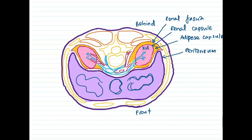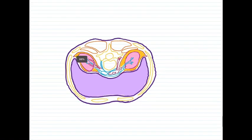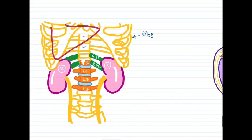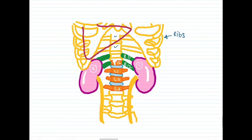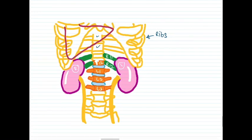The blood supply comes mainly from the IVC and the aorta, forming renal arteries and renal veins, which provide the blood supply to our kidneys. Now we need to know the internal structure of the kidney — what is inside the kidney.